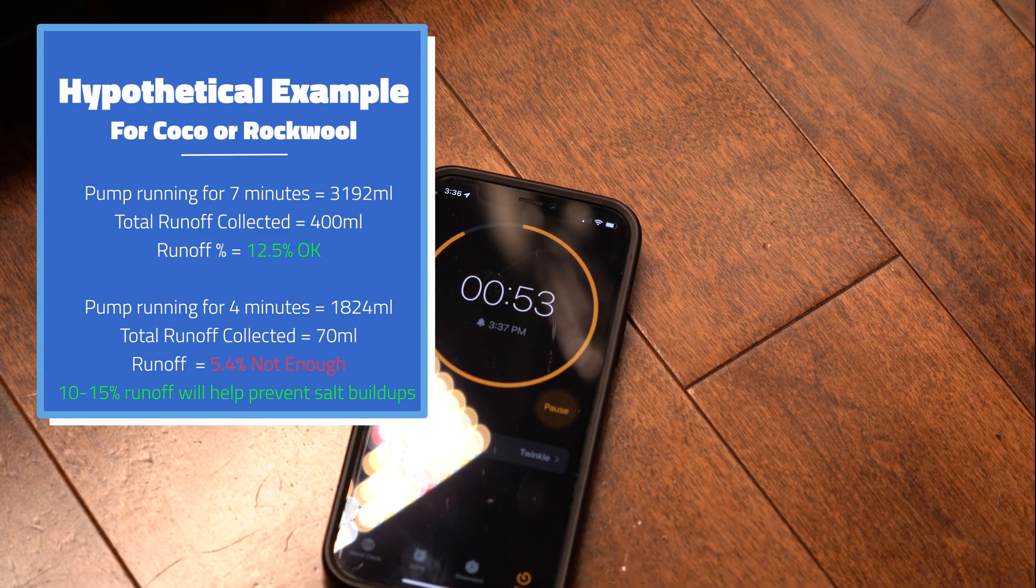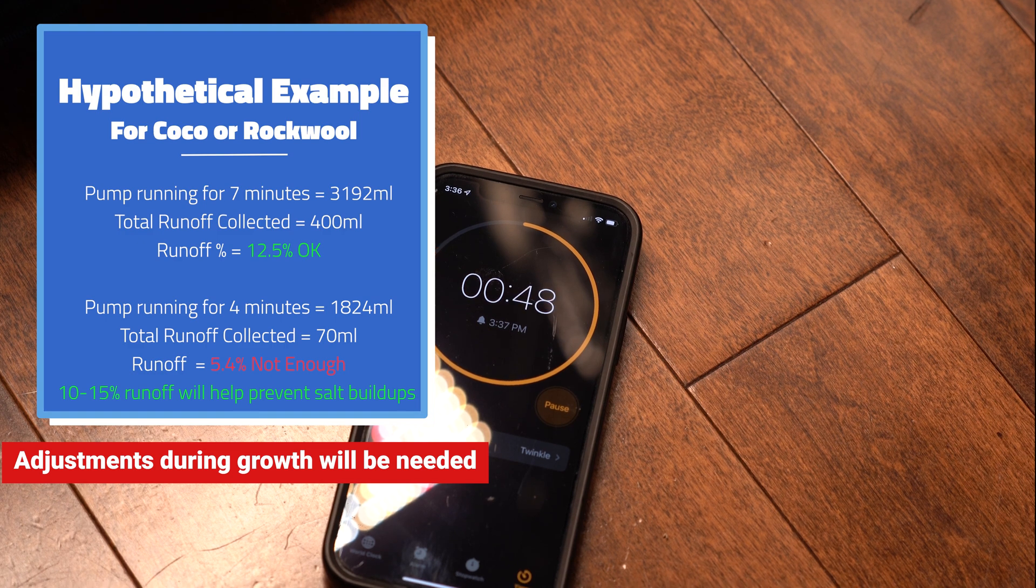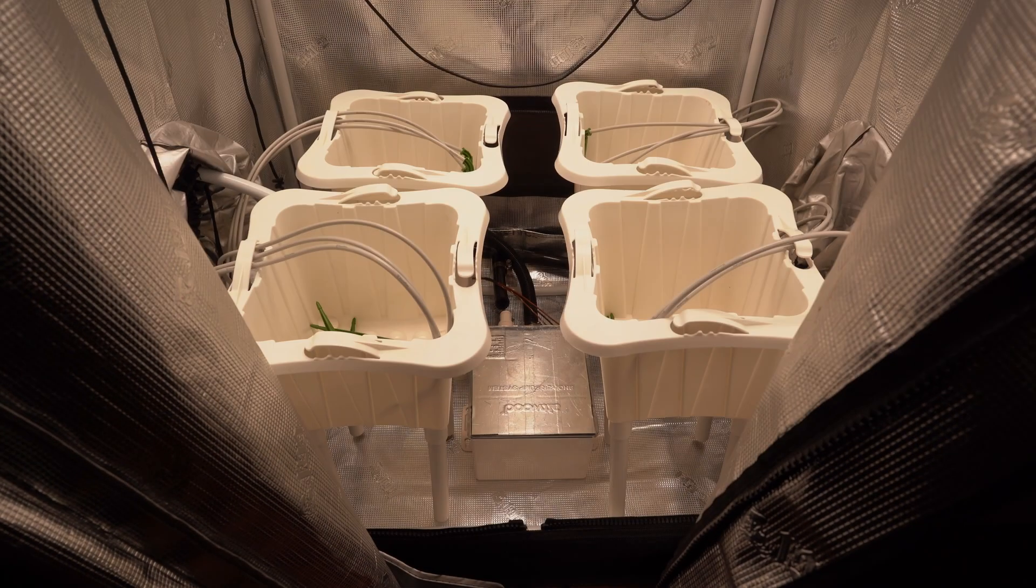I'll start the pump and monitor the total runoff at different intervals. As soon as I see my runoff is between 10 and 15% of the total feeding at the moment, I'll stop the pump and know how long my timer should be set to.